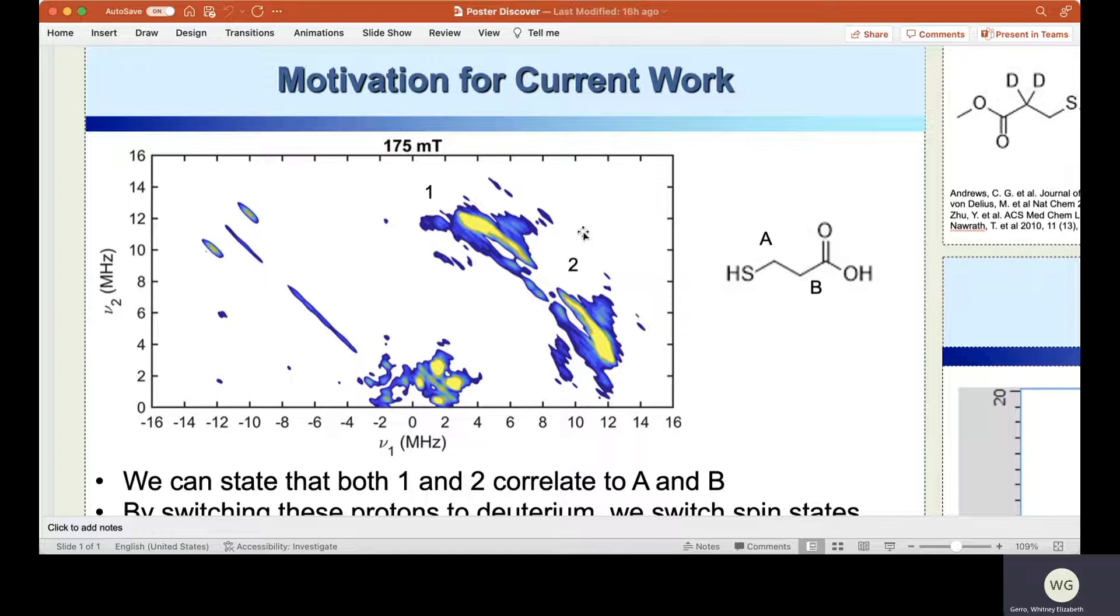To fix this, we exchange the protons on these carbons to deuterium, which changes the spin states from one half to one, therefore modulating one spot at a time to be able to provide evidence for each site's specific identity.